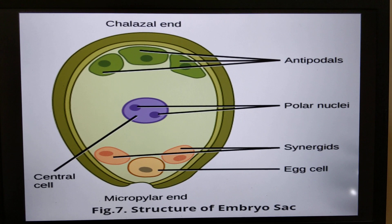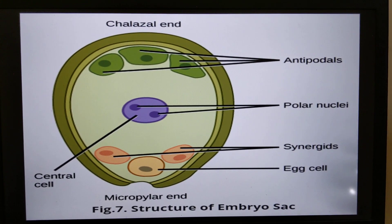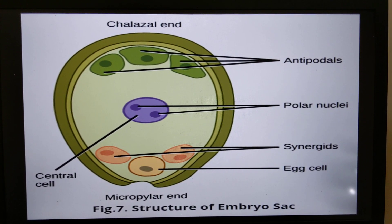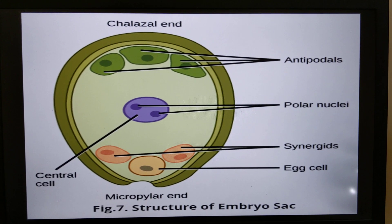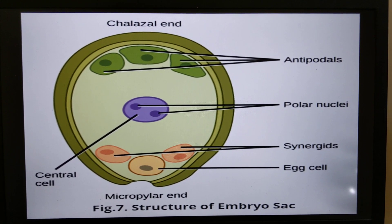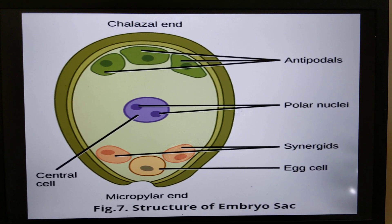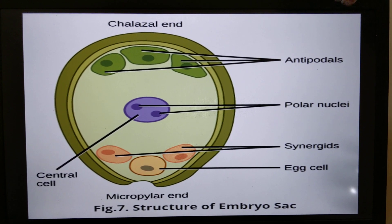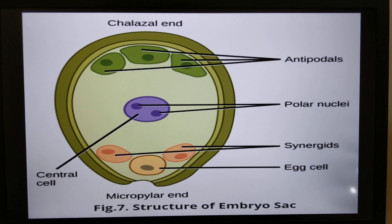If you remember in the previous video, we saw how from the functional megaspore, with three successive mitotic divisions, the mature embryo sac was formed. This structure of the embryo sac is very very important.